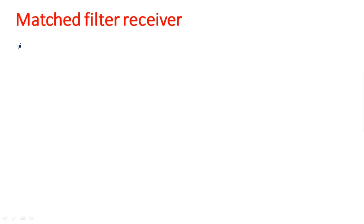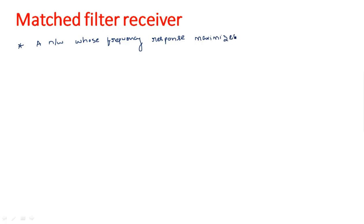In this video, I am going to explain about matched filter receiver. A matched filter is a network which maximizes the peak signal to mean noise ratio. We can define the matched filter as a network whose frequency response maximizes the peak signal to mean noise ratio.